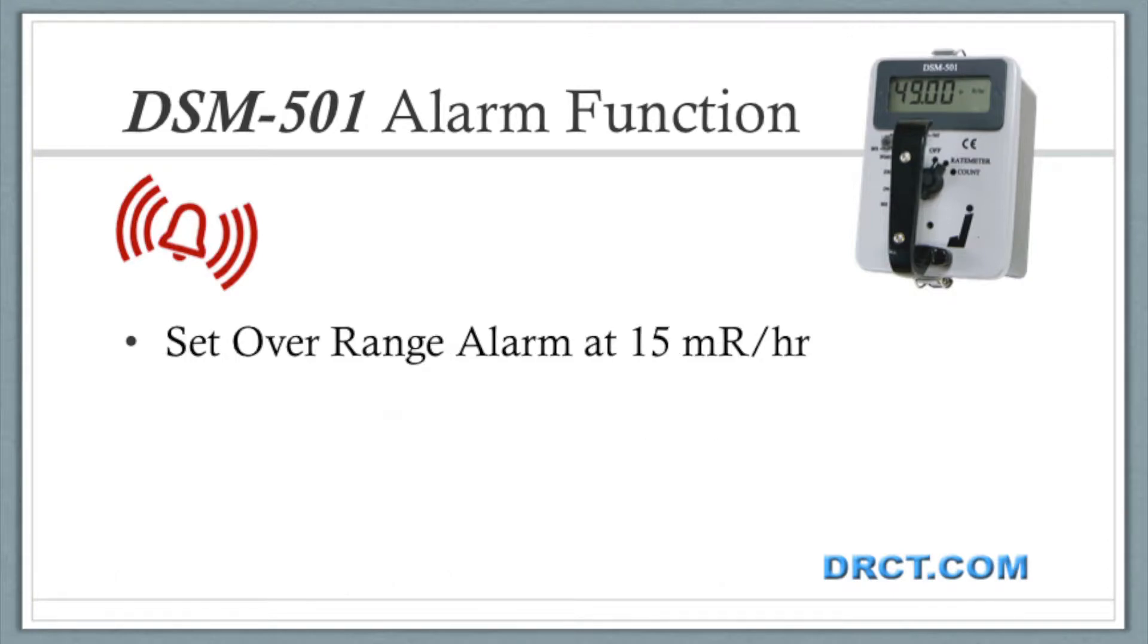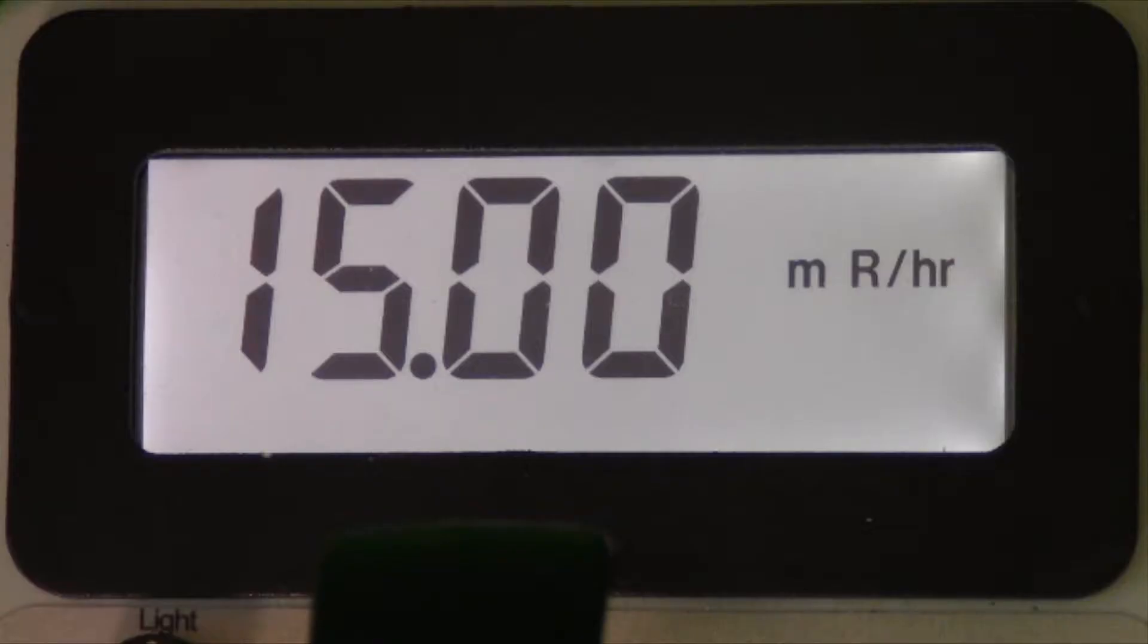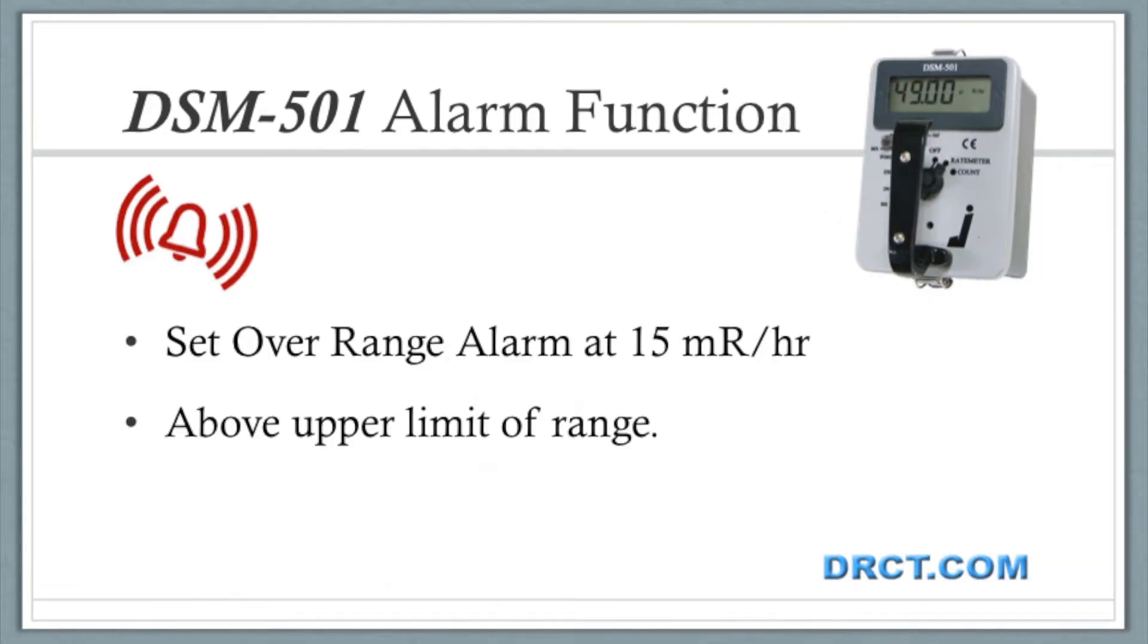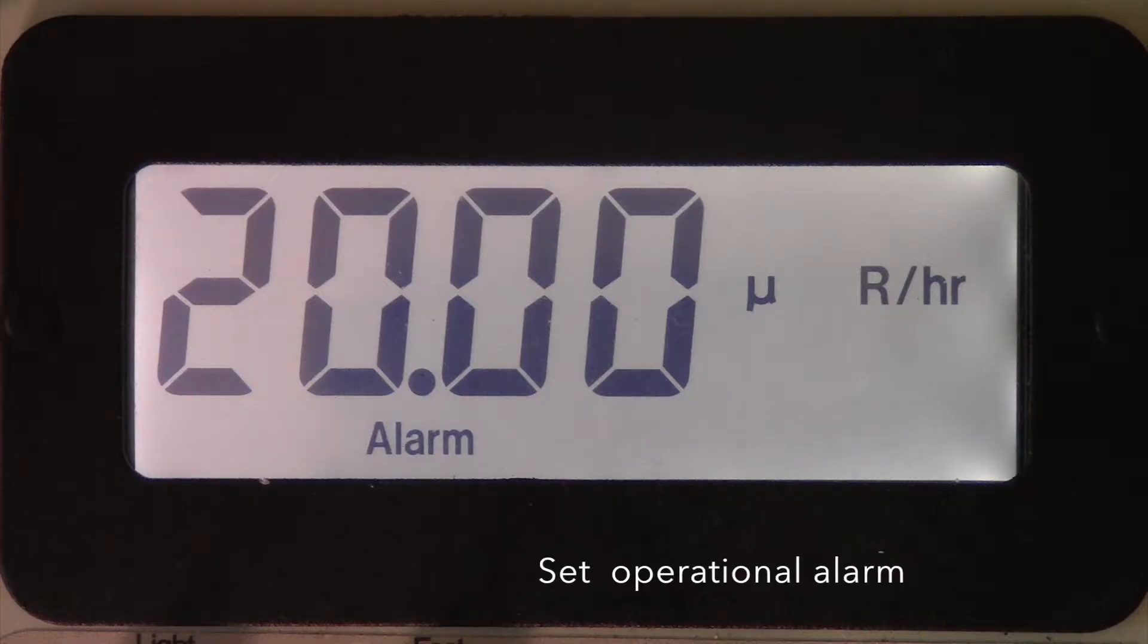The overrange alarm is often set at 15 milliroentgen per hour, somewhat above the upper limit of the meter range. Both alarms are disabled when set at zero.